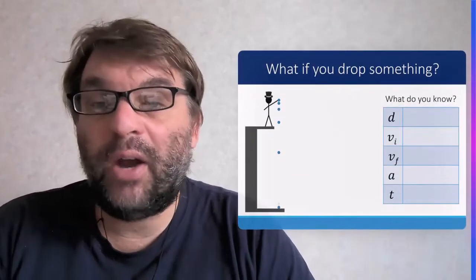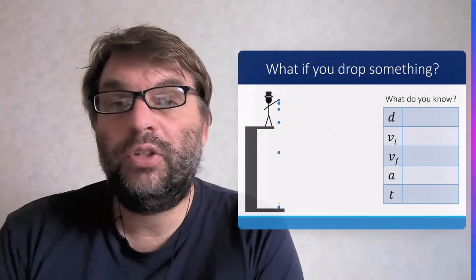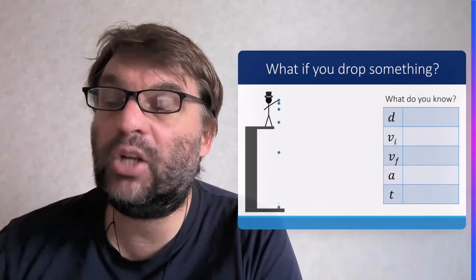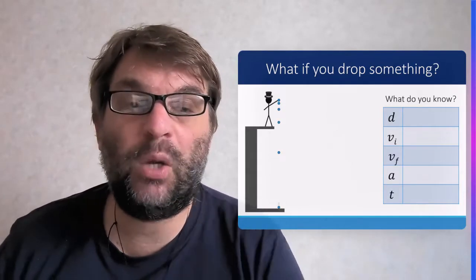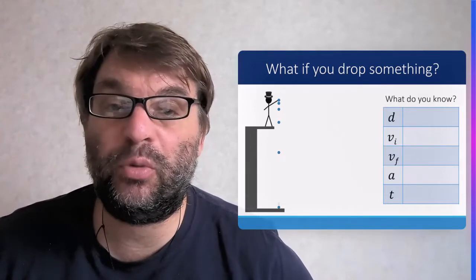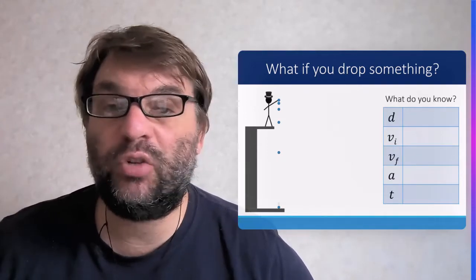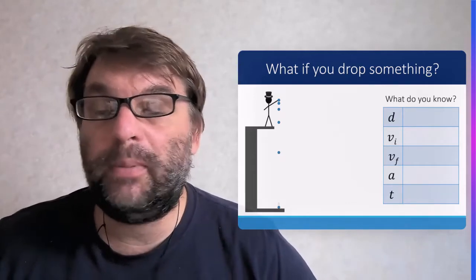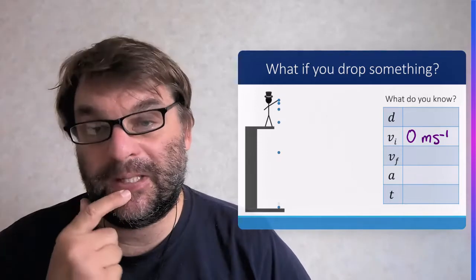So there's several scenarios when we look at freefall. The first thing is, what if we drop something? What do we actually know? We don't know the distance. We do know the initial velocity because it comes from rest. So the initial velocity, if I went onto the top of the school building and dropped a ball, it would be zero meters per second.